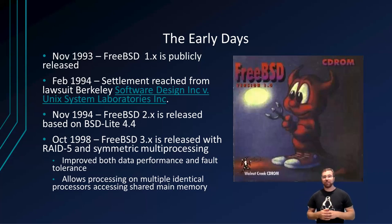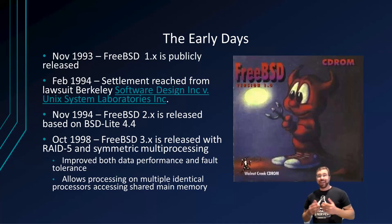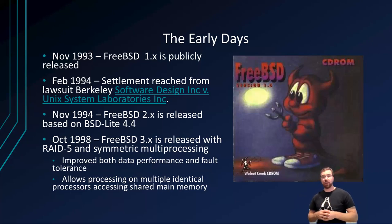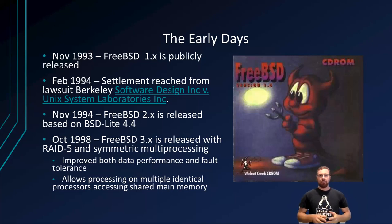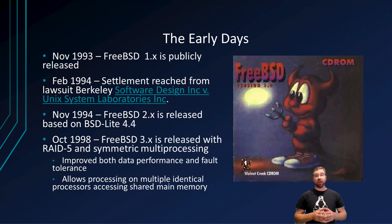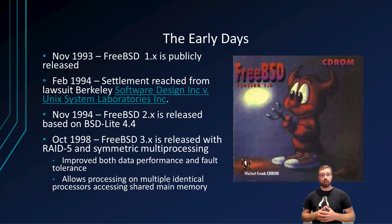At the time of first release in November of 1993, FreeBSD was quickly met with some tribulation. In 1992, AT&T had filed suit against 386BSD's parent company, Berkeley Software Design Incorporated. This suit and countersuit were settled out of court by Novell, who had purchased Unix System Laboratories Incorporated.